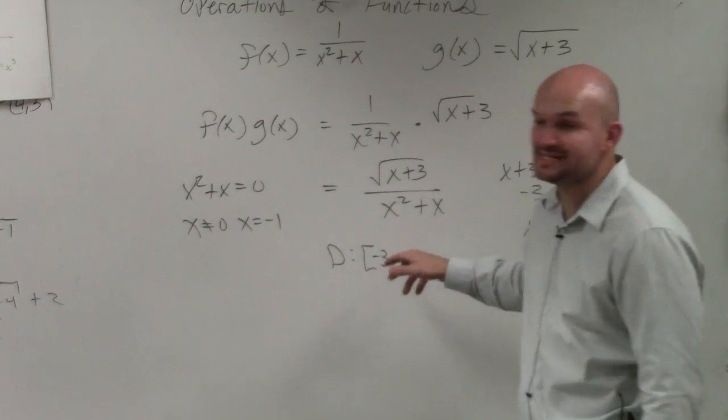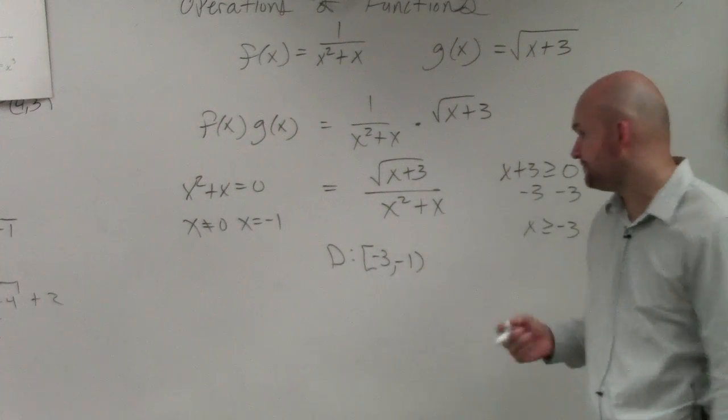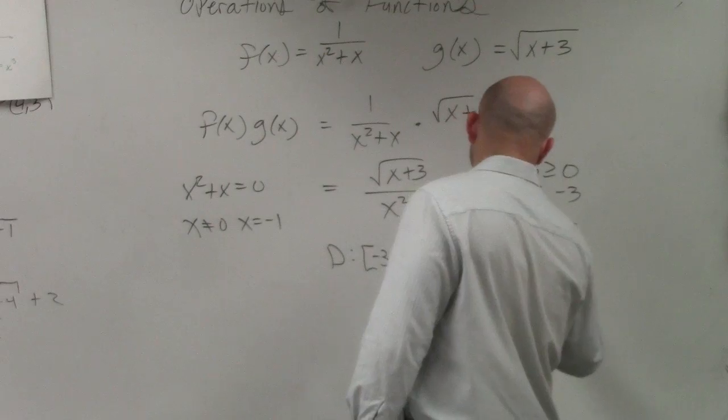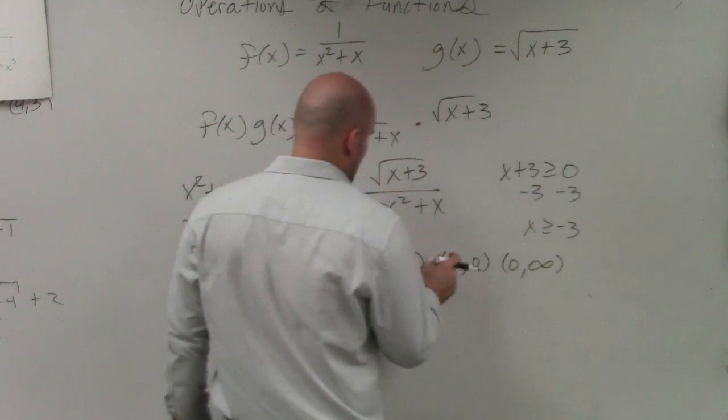And then just connect them with the union. That's for the reason it makes the denominator 0.